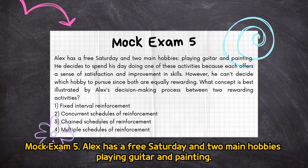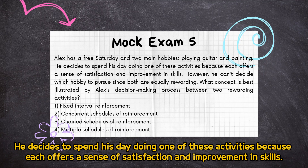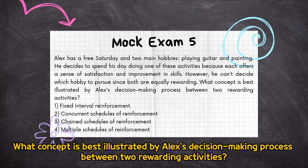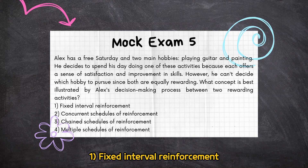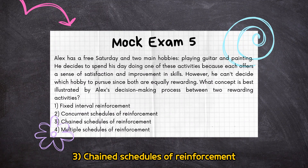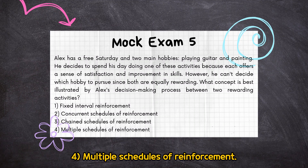Mock Exam 5: Alex has a free Saturday and two main hobbies — playing guitar and painting. He decides to spend his day doing one of these activities, because each offers a sense of satisfaction and improvement in skills. However, he can't decide which hobby to pursue since both are equally rewarding. What concept is best illustrated by Alex's decision-making process between two rewarding activities? (1) Fixed interval reinforcement, (2) Concurrent schedules of reinforcement, (3) Chain schedules of reinforcement, (4) Multiple schedules of reinforcement.